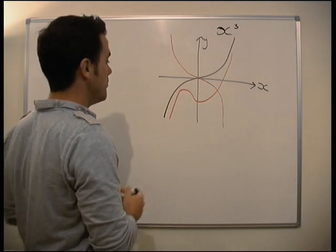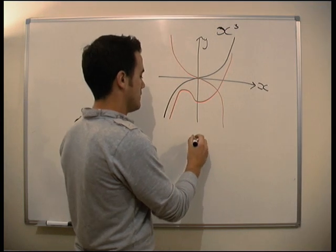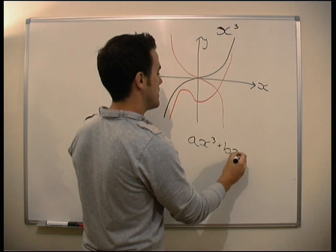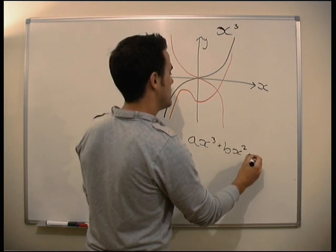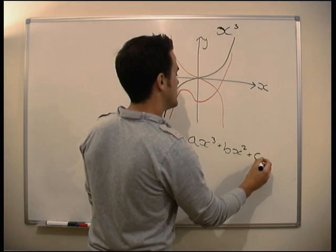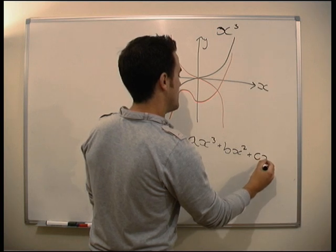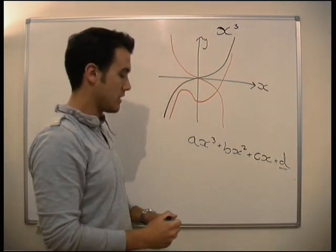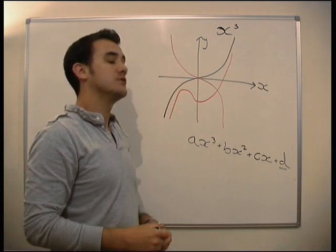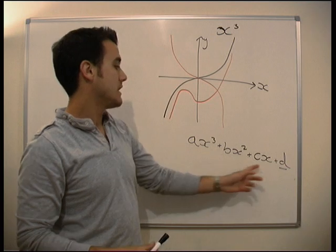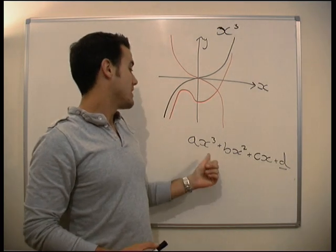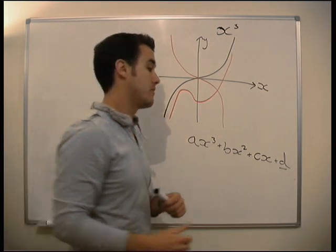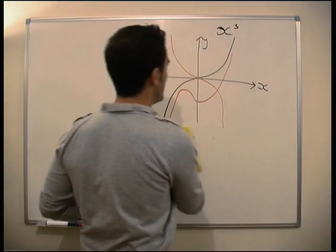These are of the form Ax cubed plus Bx squared plus Cx plus D, where D is the only thing we particularly remember — D is where it crosses the y axis. But again, it's just sort of adding one more term on to our previous graphs. So that's an x cubed graph.